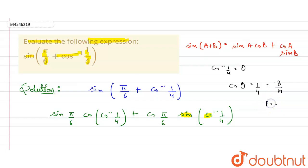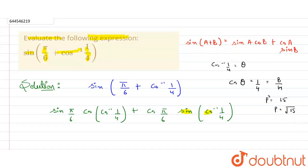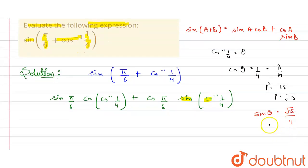The perpendicular p satisfies p² = h² − b² = 16 − 1 = 15, so p = √15. Therefore sine theta = perpendicular upon hypotenuse = √15 upon 4. This means cos⁻¹(1/4) = theta = sine inverse of √15 by 4.